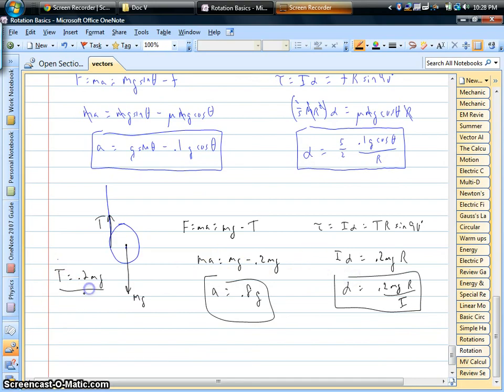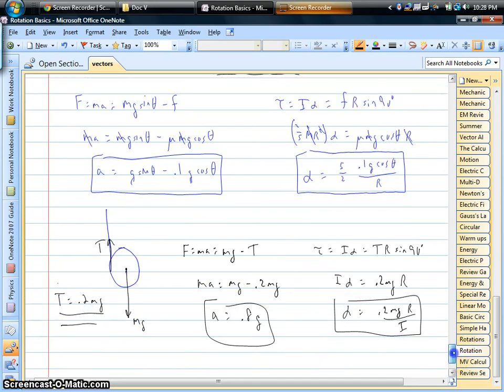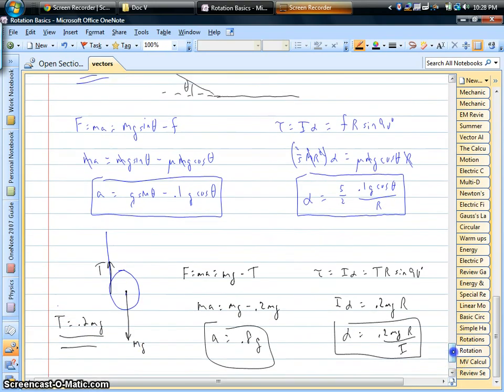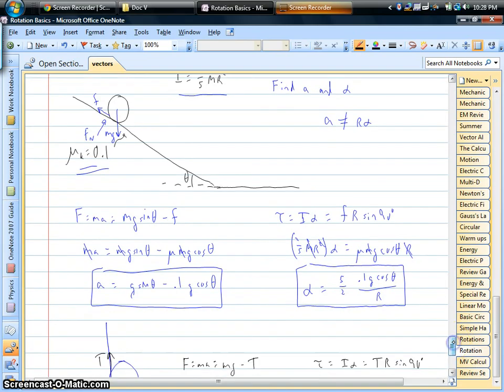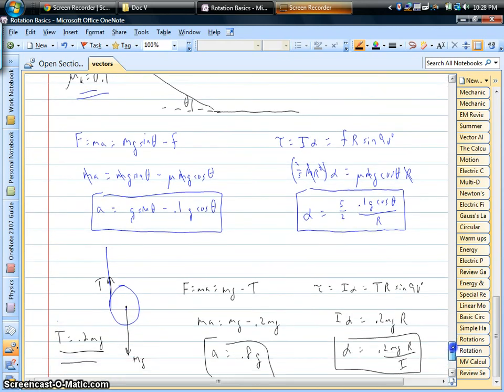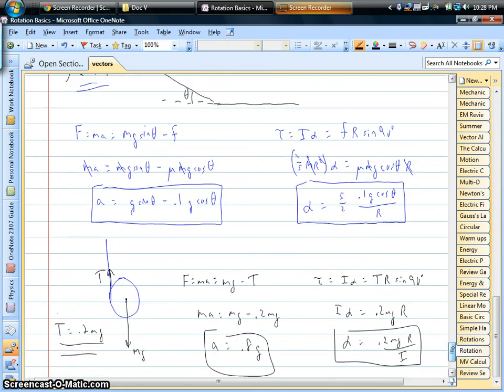All of that is done as soon as we're given the tension for a yo-yo. All of this is done as soon as we're given something about the friction force if we have a rolling problem. So even though we have this extra unknown, a and alpha are no longer related to each other. We can find them by doing exactly the same thing that we always do.